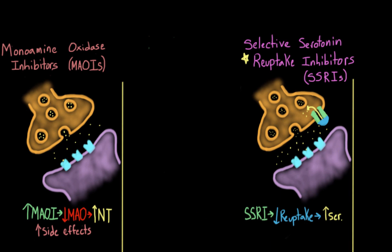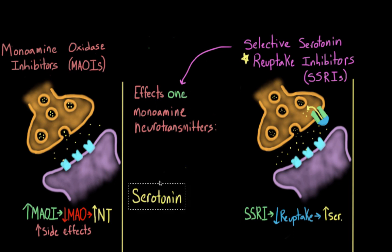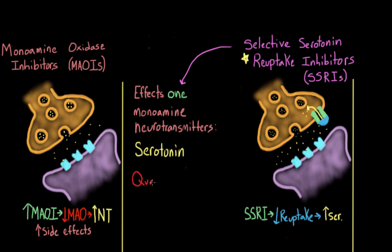SSRIs are generally the first choice for individuals seeking treatment for depression, with the exception of specific cases like bipolar disorder. They are really effective, like the other antidepressants, but also have fewer side effects because they are the most selective in what they act on. However, they aren't side-effect free — they also work everywhere in the brain and body, so side effects can include sleeping problems, weight gain, and sexual dysfunction. While these are not life-threatening, they can negatively impact quality of life. One exception is serotonin syndrome, a rare but serious condition that can occur when SSRIs are combined with other substances that also increase serotonin.